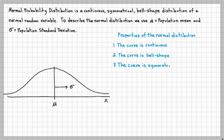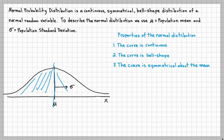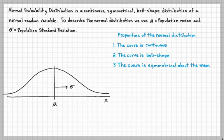The third property is the curve is symmetrical about the mean. One side is the same as the other, so it's balanced. Number four: the mean, the median, and the mode are all equal to each other.